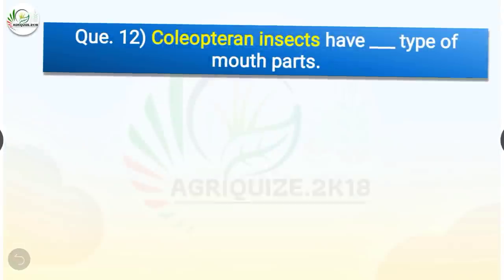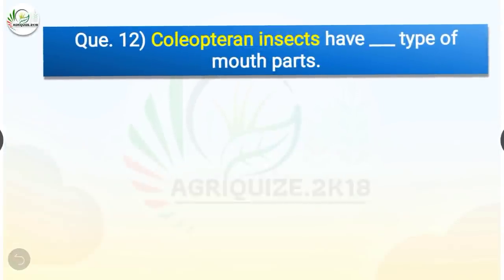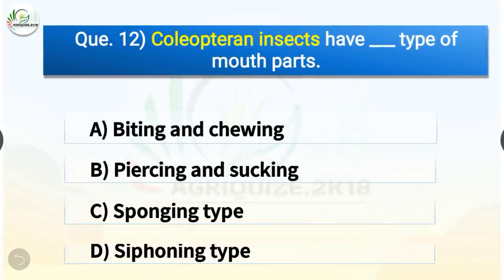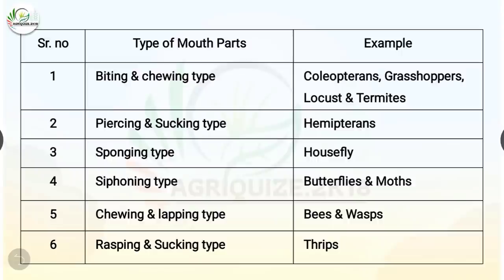Question number 12. Coleopteran insects have which type of mouth parts? The options are biting and chewing, piercing and sucking, sponging type, or siphoning type. The correct answer is option A, biting and chewing. Coleopteran insects have biting and chewing type of mouth parts. Biting and chewing type examples: coleopterans, grasshoppers, locusts, and termites.